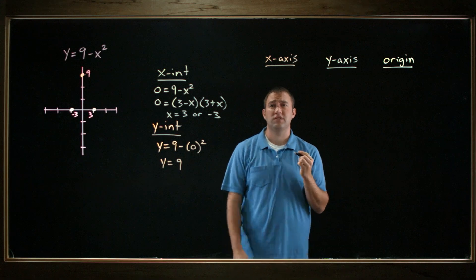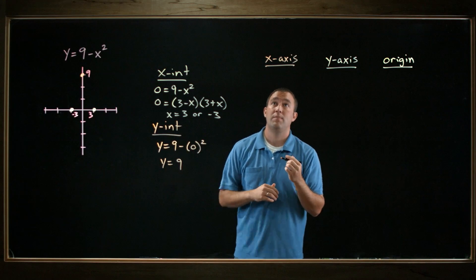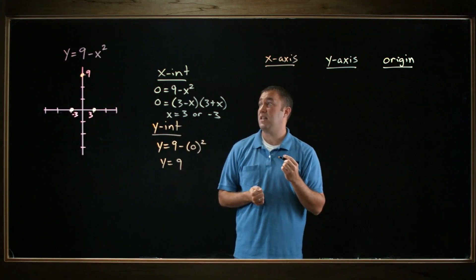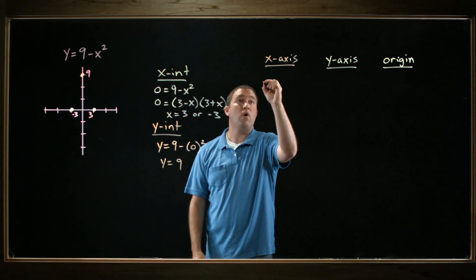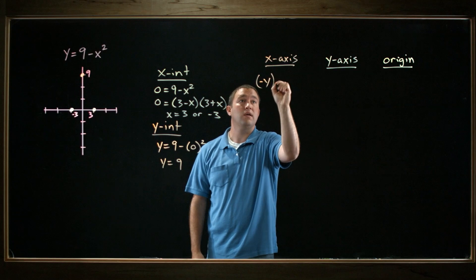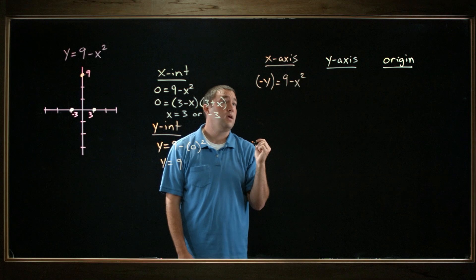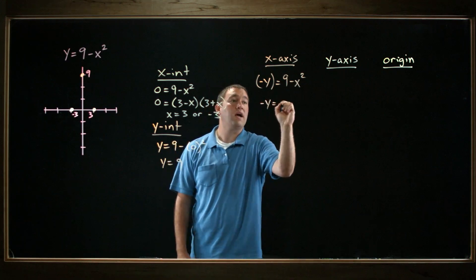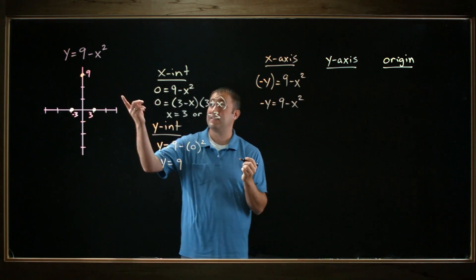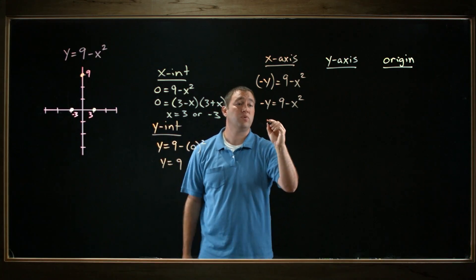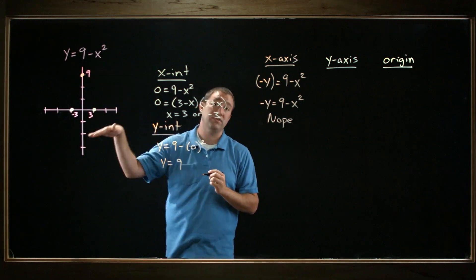Let's check for symmetry about the x-axis — does this thing look the same on the top as it does on the bottom? If it's symmetric about the x-axis, then if I replace y with negative y, I'll get the same equation. So instead of y, I'll put negative y, and I get negative y equals 9 minus x squared. This is not the same as the original equation, so this one is not symmetric about the x-axis.